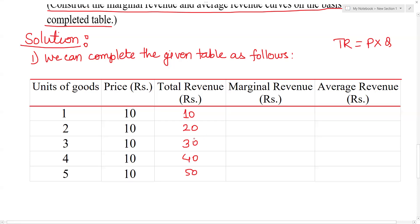Now, marginal revenue — what is this? Marginal revenue: MRn is equal to TRn minus TRn minus 1, that is, the change in total revenue.